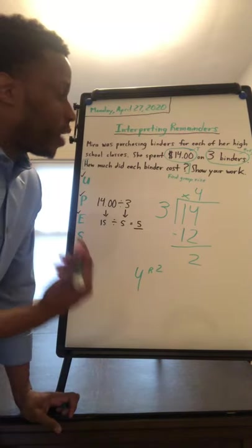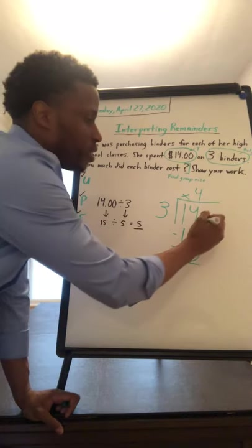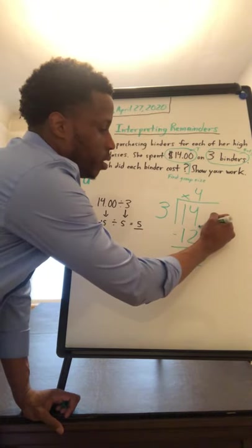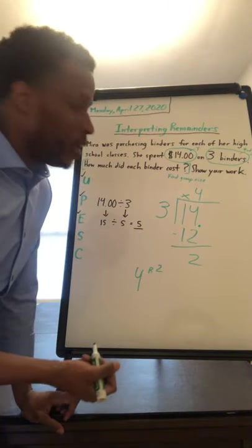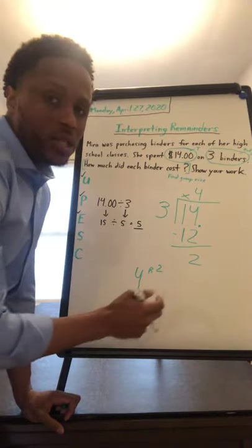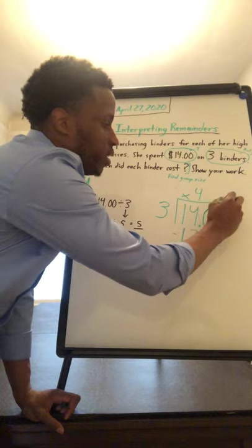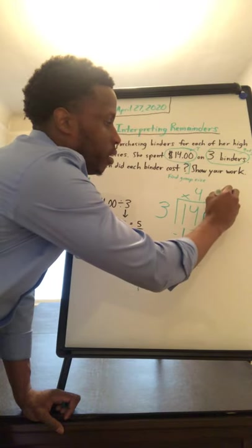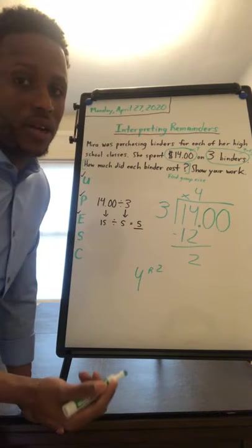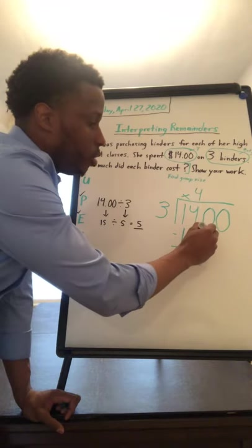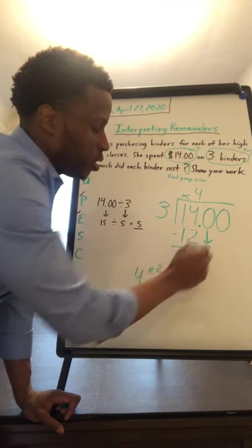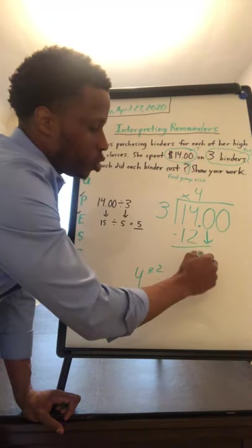And so what we can do is extend the decimal in order to continue dividing. So we had $14. Adding those two zeros does not change the value. And so just like we already know how to divide, we would continue by bringing down the next digit, which would make this 20.